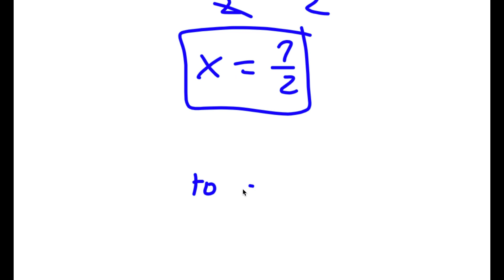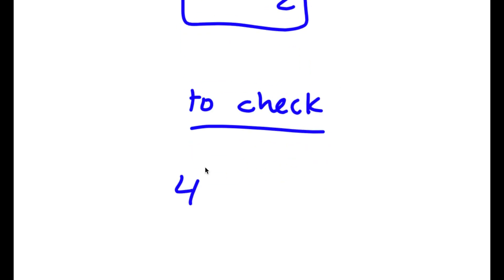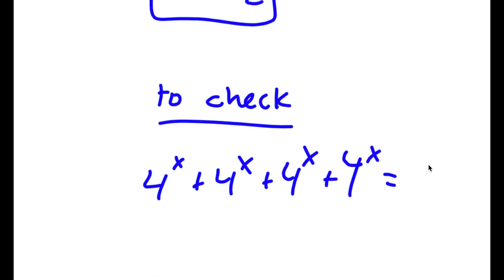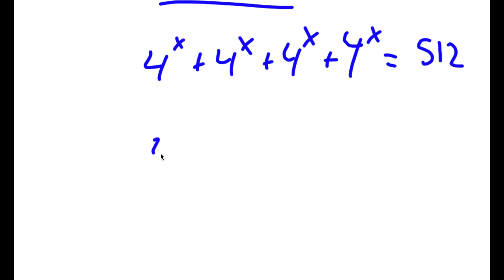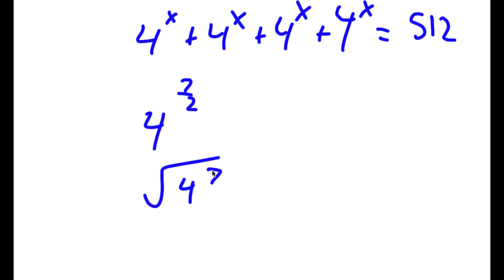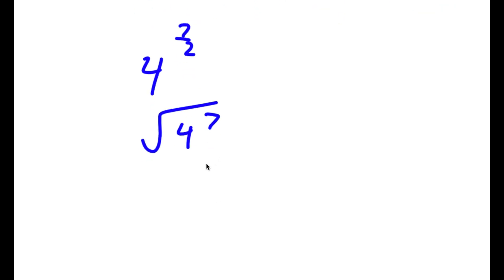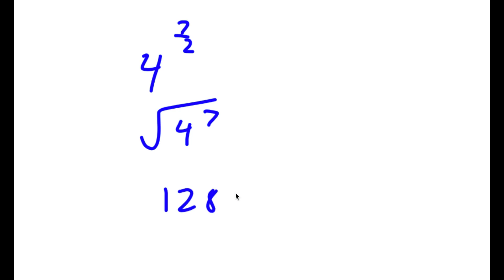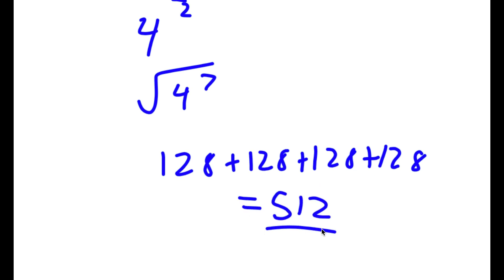To check: 4 to the power of 7 over 2 is the square root of 4 to the power of 7, which equals 128. So I have 128 plus 128 plus 128 plus 128, which equals 512. This is correct.